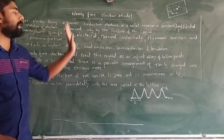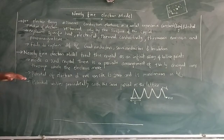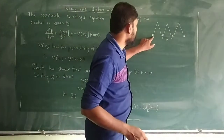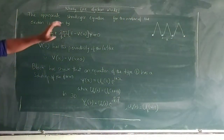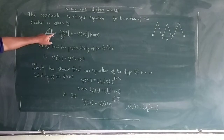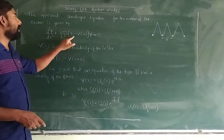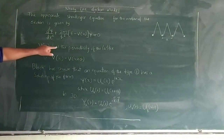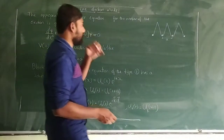This is the nearly free electron model concept. When we consider this kind of potential, the Schrödinger equation takes the form: d²ψ/dx² + (2m/ℏ²)(E − V(x))ψ = 0. The potential V(x) has the periodicity of the lattice.